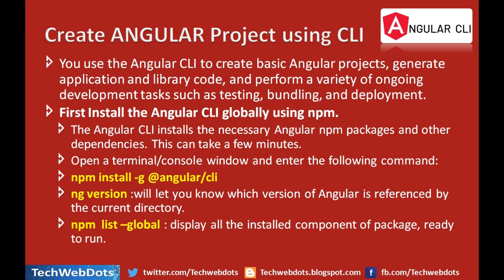First we need to install Angular CLI globally using npm. We have already installed npm and Node.js, so now we will install Angular CLI. The necessary npm packages and other dependencies will be automatically installed, and this can take a few minutes. Open the terminal or console window and enter the command: npm install -g @angular/cli.